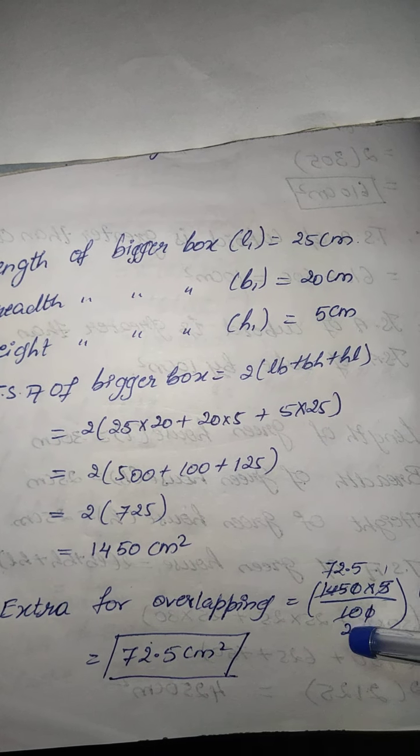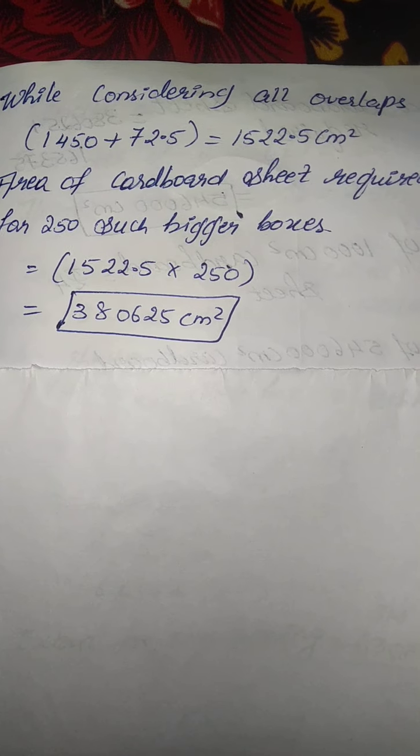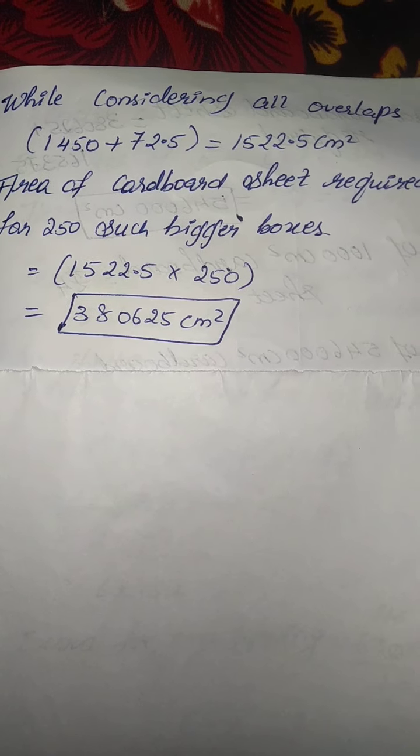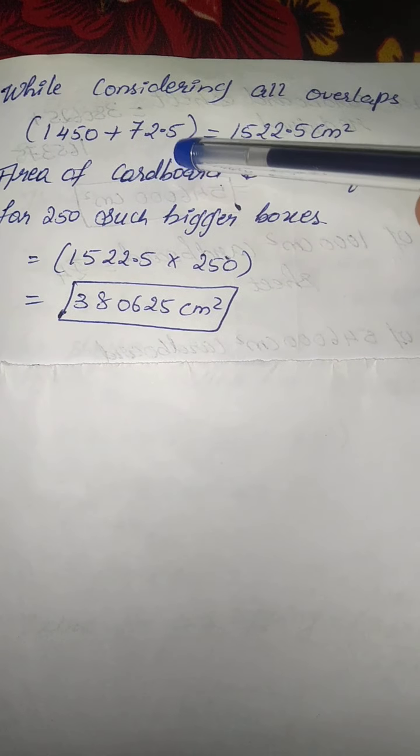I have cancelled. On further cancellation, I got 72.5 centimeter square. While considering all overlaps, it is 1450 totally, and overlaps is 72.5.